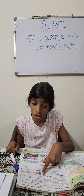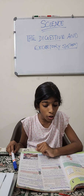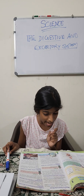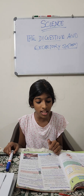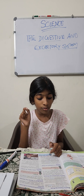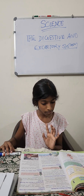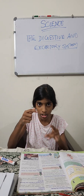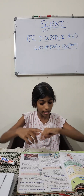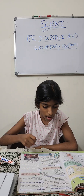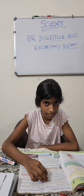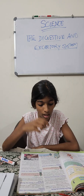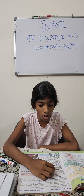Digestion of protein happens in the stomach. Your stomach is a muscular bag that constantly squeezes the food and mixes it with digestive juices. The proteins in the food are digested in your stomach.